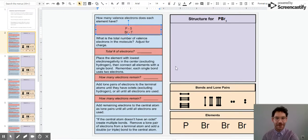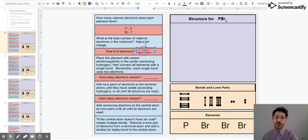Next question. What is the total number of valence electrons in the molecule? There is no charge here so I'm going to ignore that, but I'm going to add up the valence electrons from each element. Each bromine gives me seven, so seven plus seven plus seven is 21 and the phosphorus gives me five. So 21 plus five gives me 26 valence electrons total.